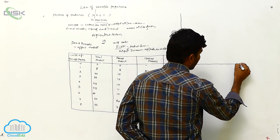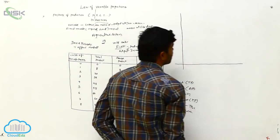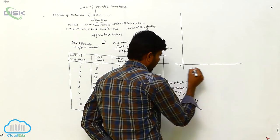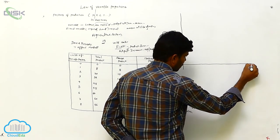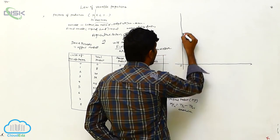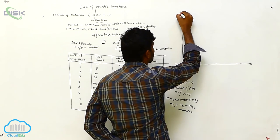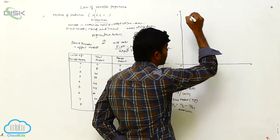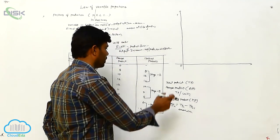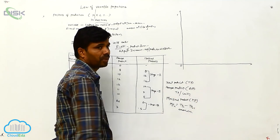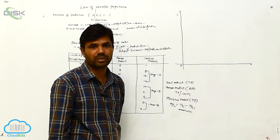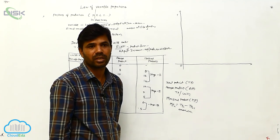Here is the diagram. We can show TP, AP, and MP — which stage will increase: first stage, second stage — starting now.